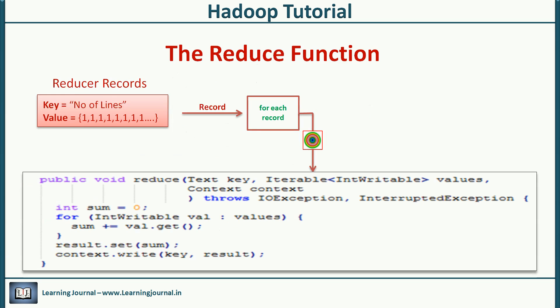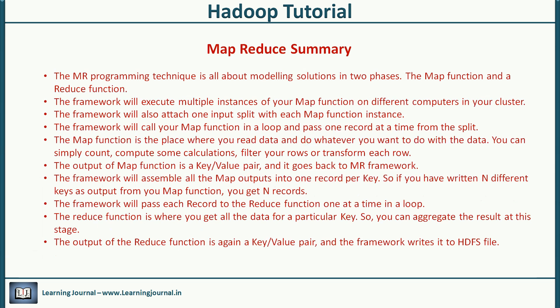Once we have records for the reducer, the MapReduce execution framework will call the reducer in a loop and pass one record for each iteration. In our example, we have only one record, so the reducer gets called only once. Rest is simple. We just iterate through all of these and sum them to get the total count. The output goes to the framework, which in turn will write it to an HDFS file.